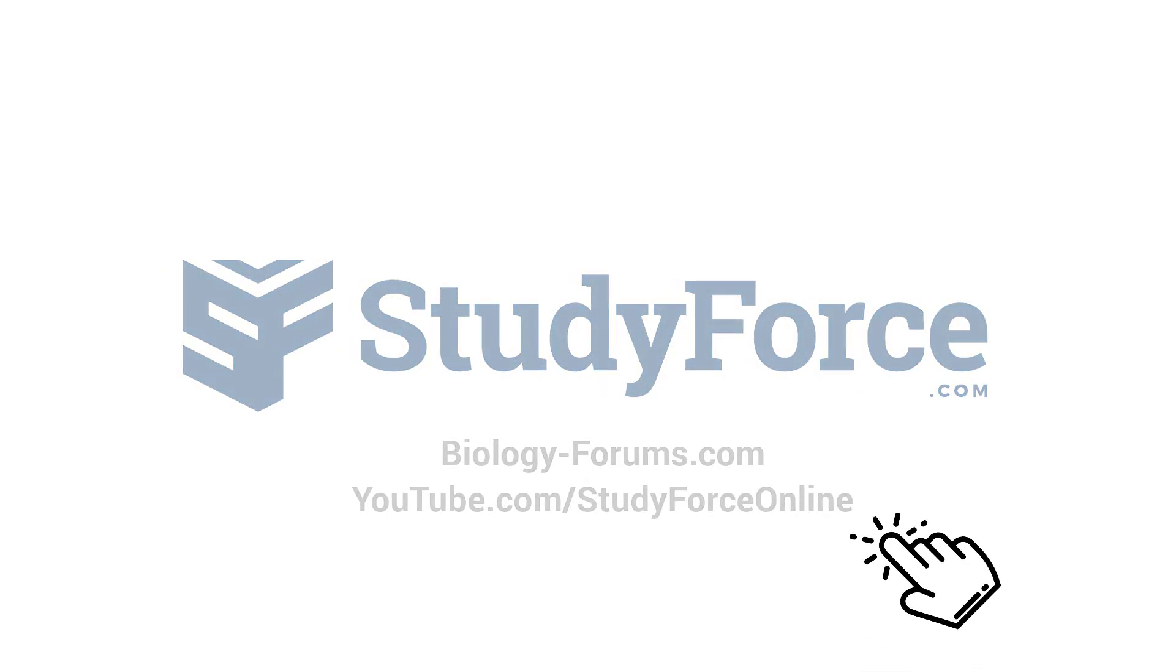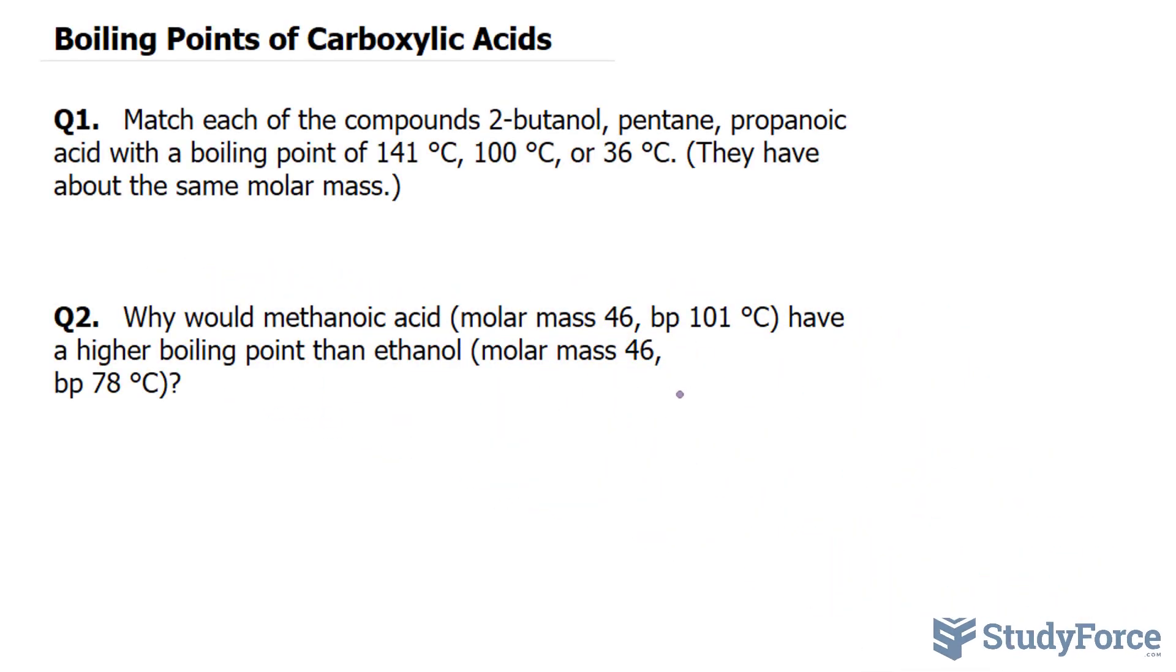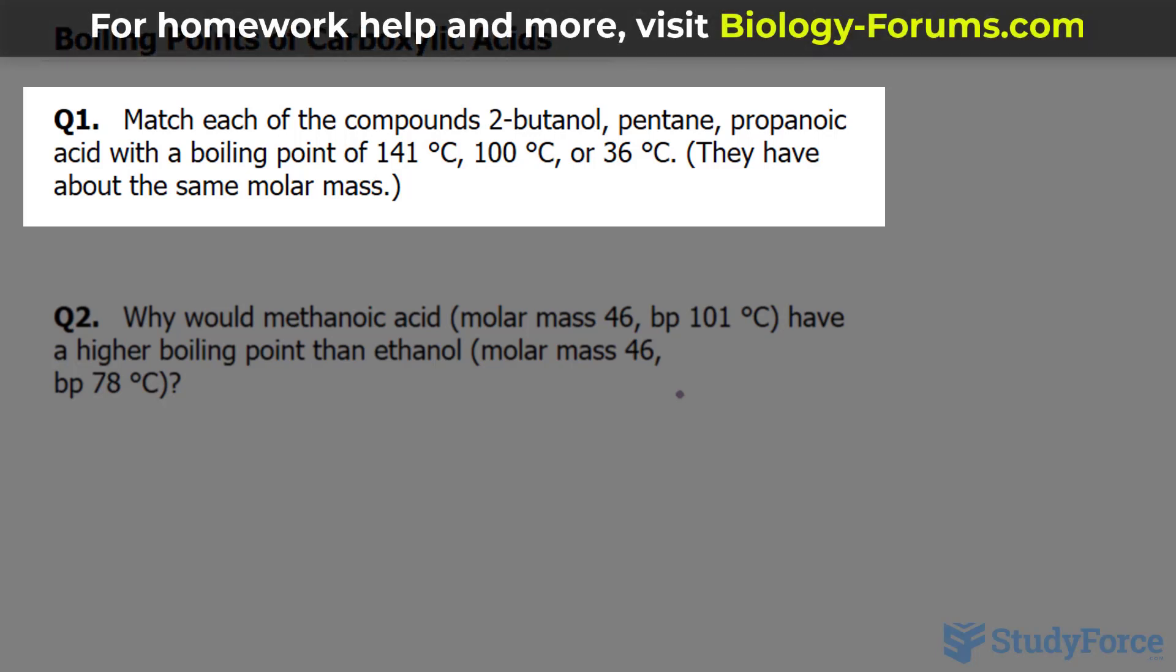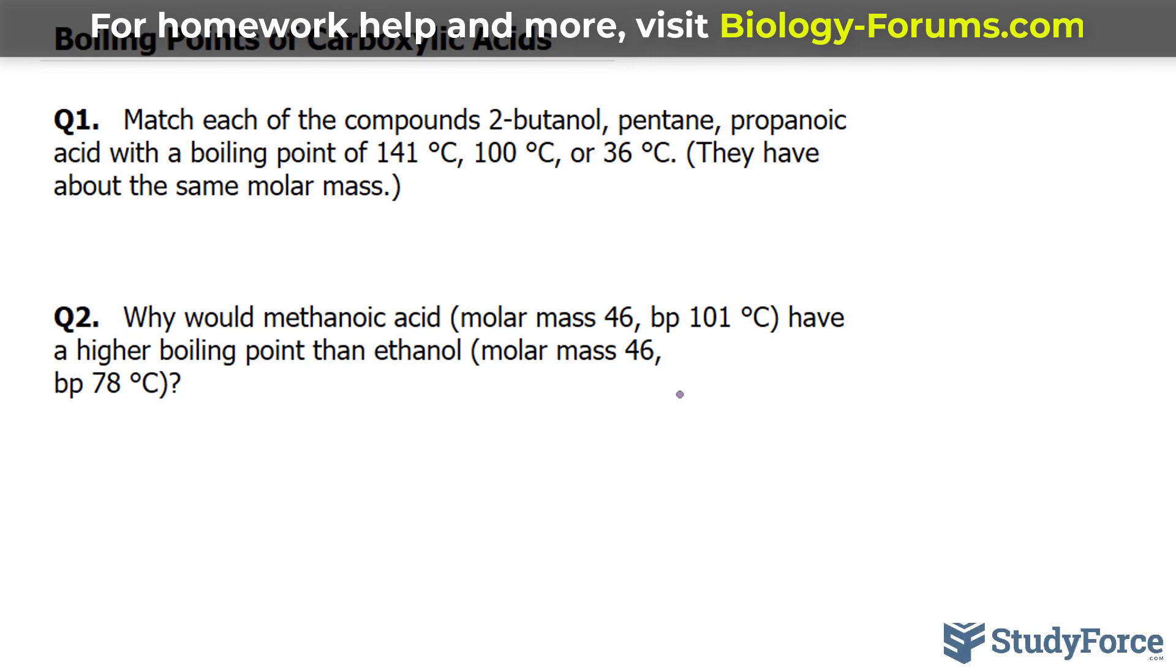In this lesson, we'll be discussing boiling points of carboxylic acids. Question 1 reads, match each of the compounds 2-butanol, pentane, propanoic acid with a boiling point of 141 degrees Celsius, 100 degrees Celsius, or 36 degrees Celsius. They have about the same molar masses.